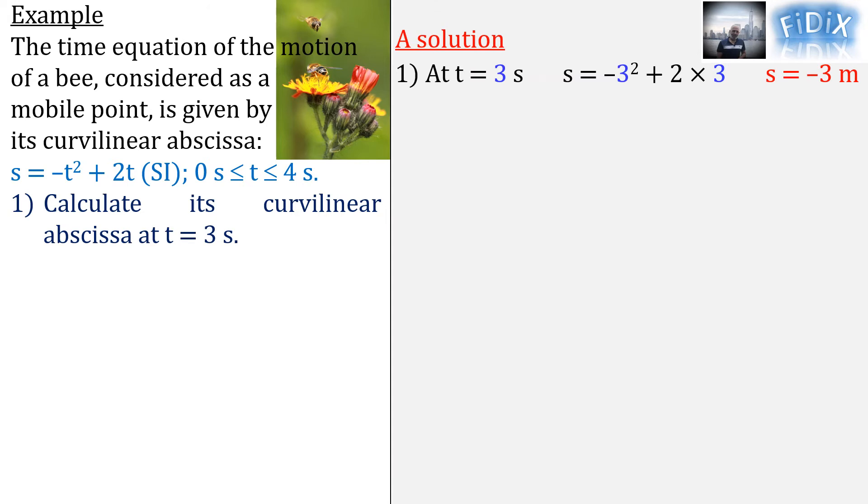To answer this question, we just replace t by its value in the time equation and get s equals minus 3 meters.